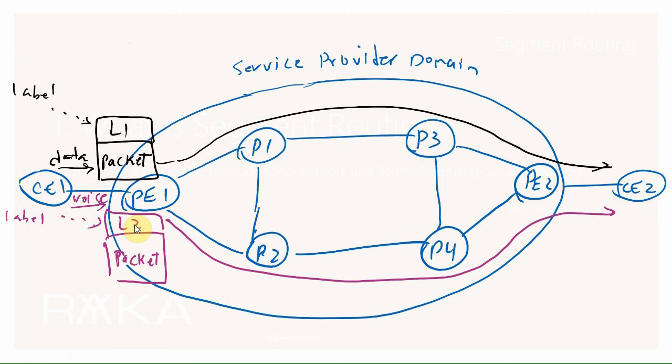The disadvantage of MPLS network is that all routers must maintain the state of all paths. Data traffic with the same IP destination but with different labels must be forwarded through different paths, and all routers need to know these labels and these paths.